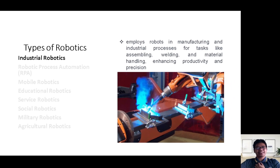The first category is industrial robotics. Imagine a world where robots collaborate seamlessly alongside humans in manufacturing and industry. Industrial robotics does just that. These robots take center stage in tasks like assembling,